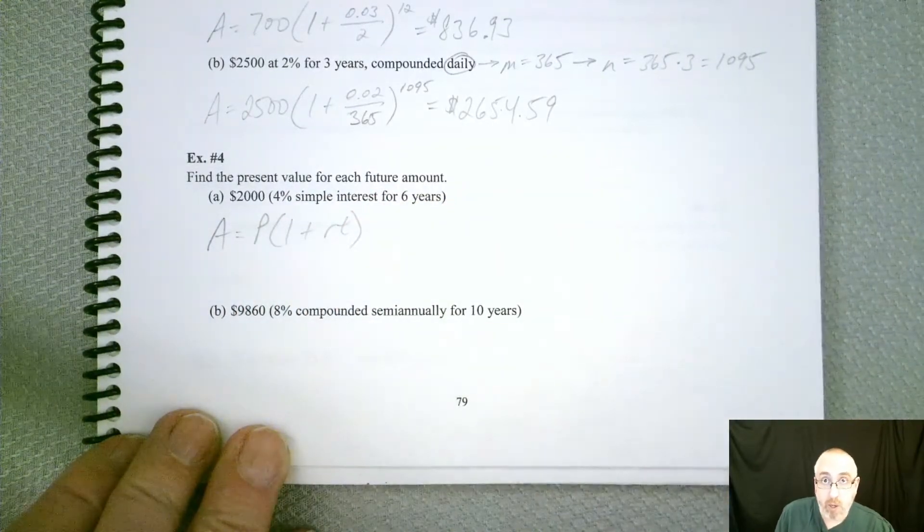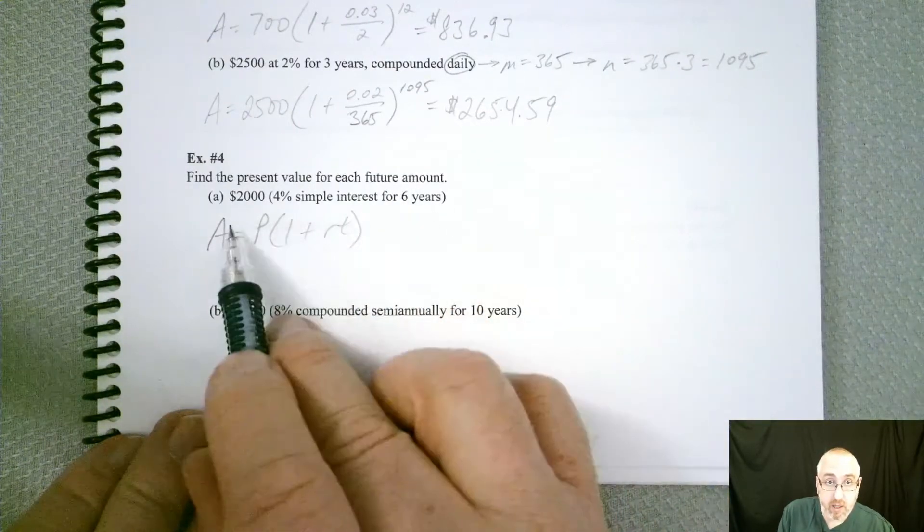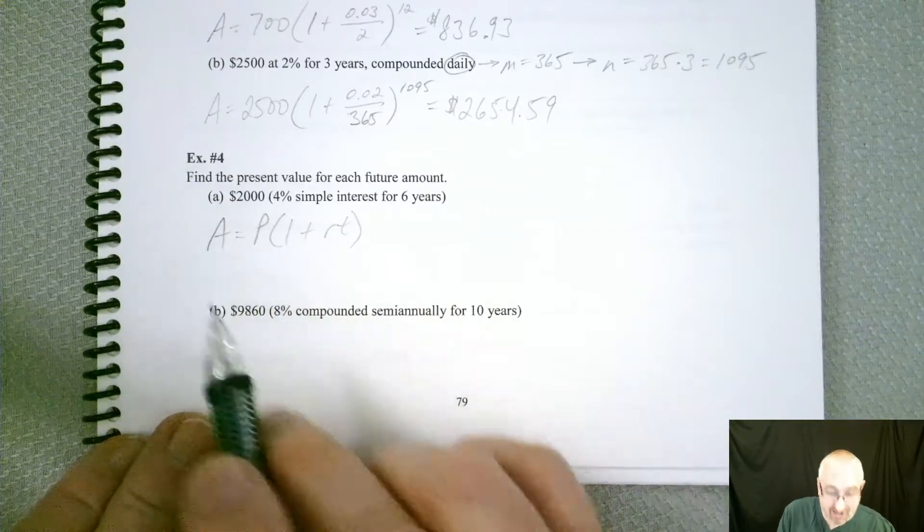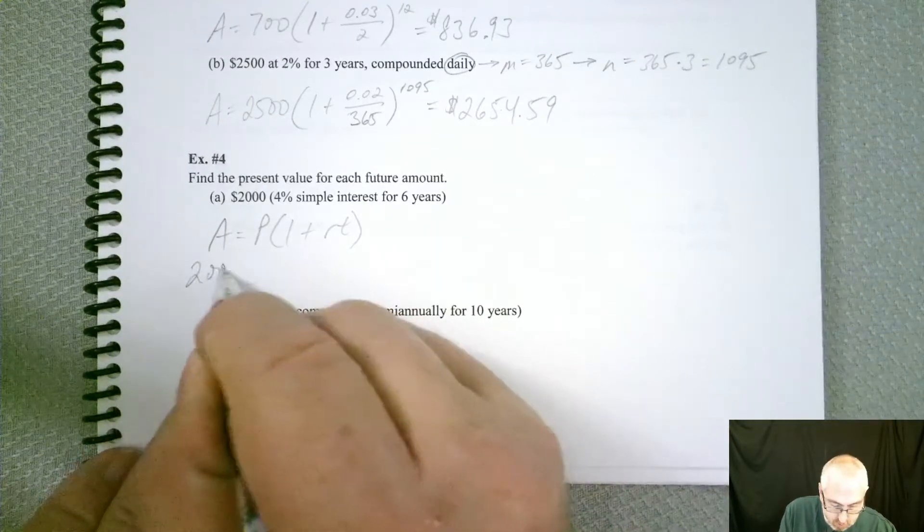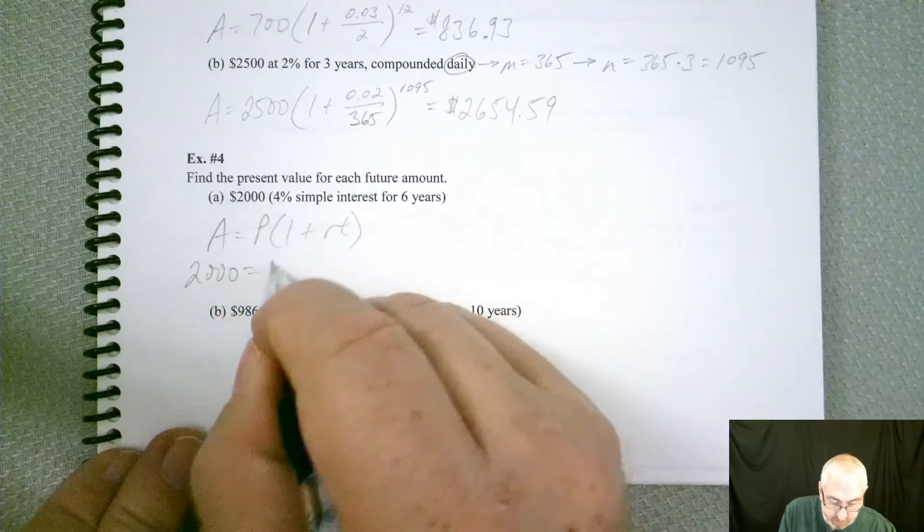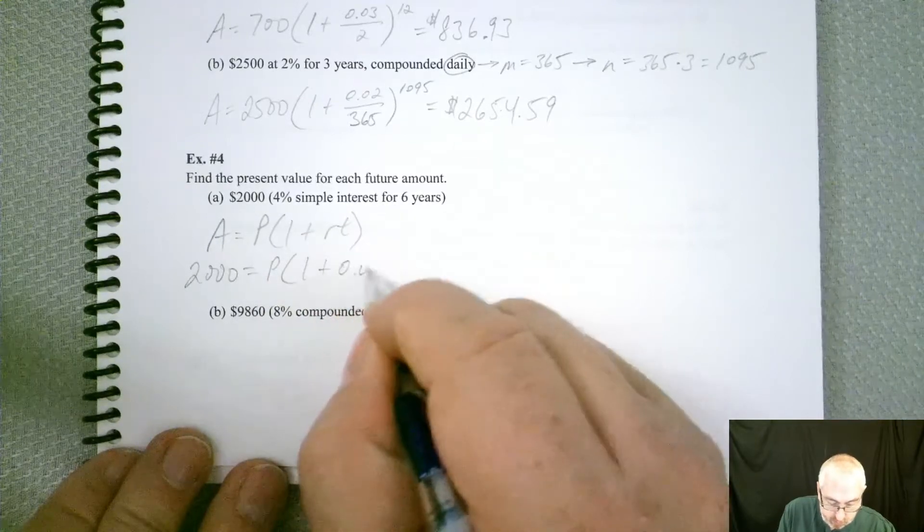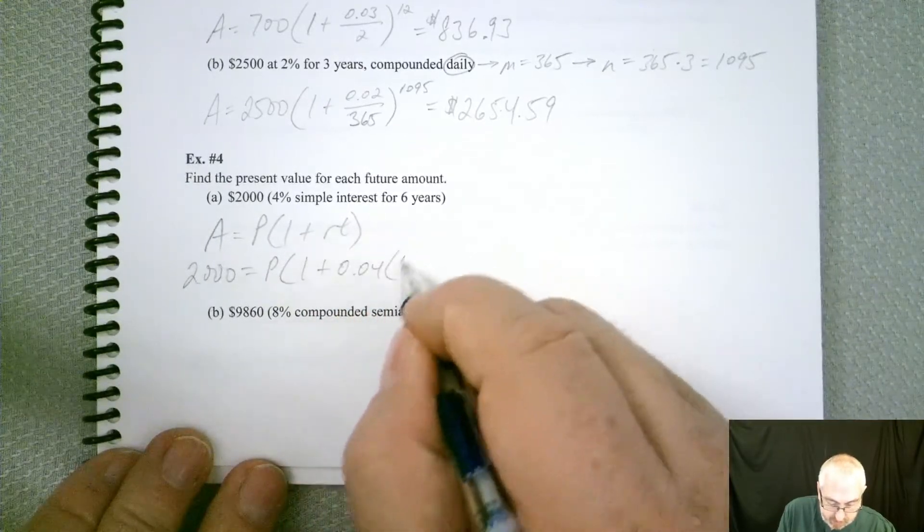Now what do we know? Be careful. We know the future. So the future is $2,000 and that replaces A. We don't know the present. That's what we're trying to find. So we're trying to find P, and so 4% is 0.04 times six years.